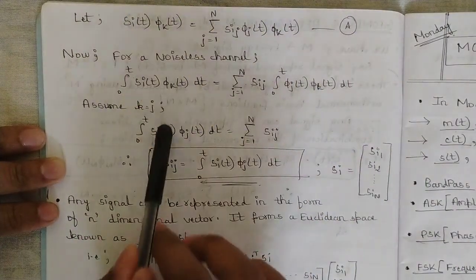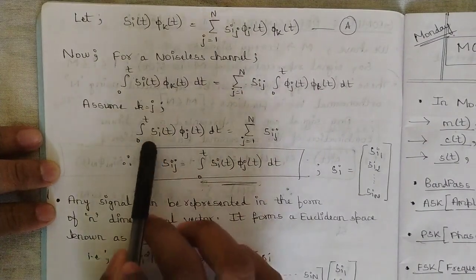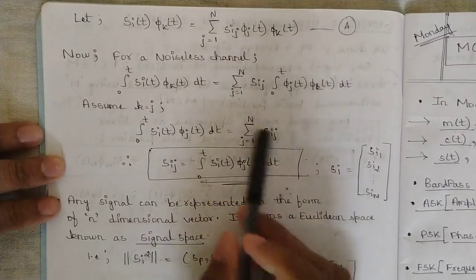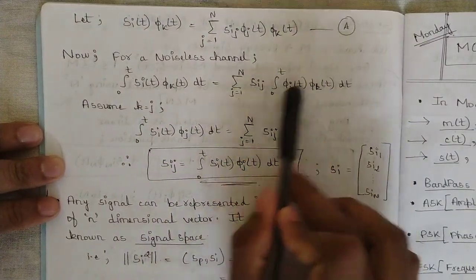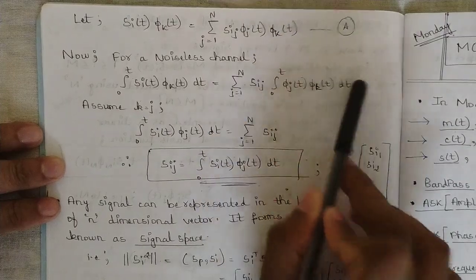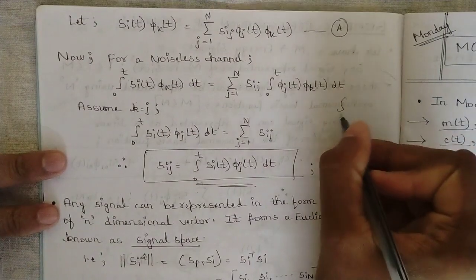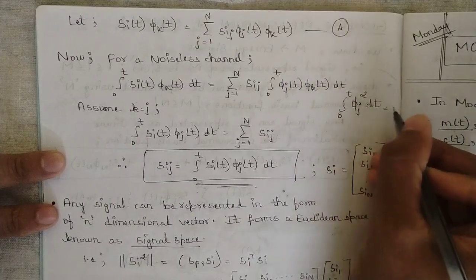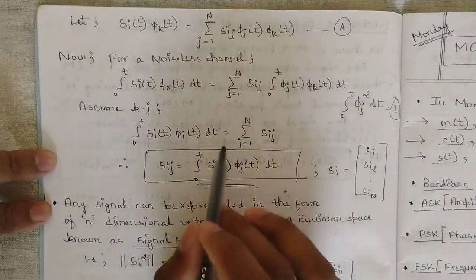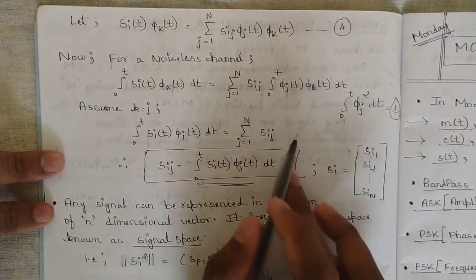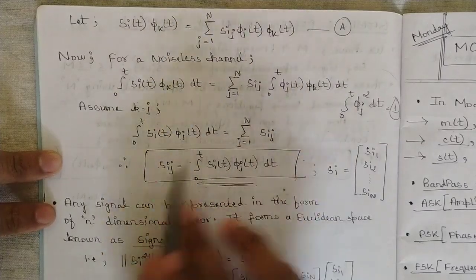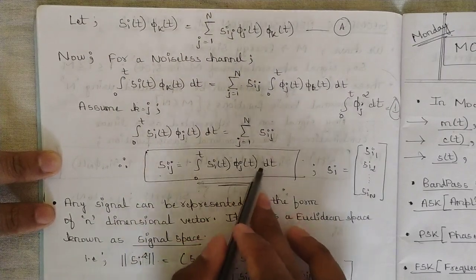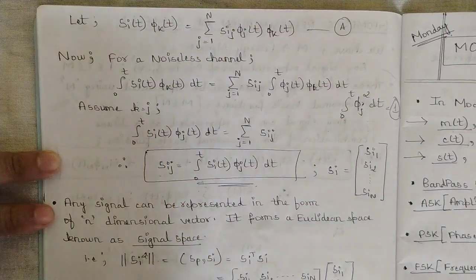Setting k equal to j, we get: the integral from 0 to T of s_I of t times phi_j of t dt equals summation of s_Ij, because when j equals k the product phi_j times phi_k becomes phi_j squared. By the orthonormality property, the integral of phi_j squared equals 1. Therefore, s_Ij equals the integral from 0 to T of s_I of t times phi_j of t dt, where j ranges from 1 to N.